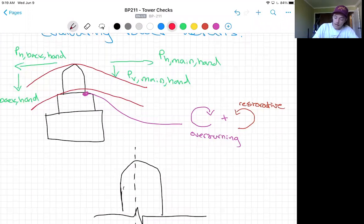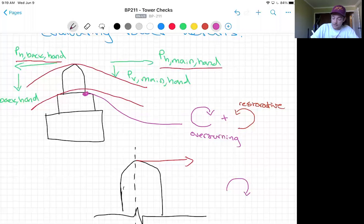So our mainspan horizontal force minus our backspan force will leave us a net horizontal force. And like I said, this both contributes to an overturning moment as well as causing internal forces in the reinforced concrete column that is the tower.